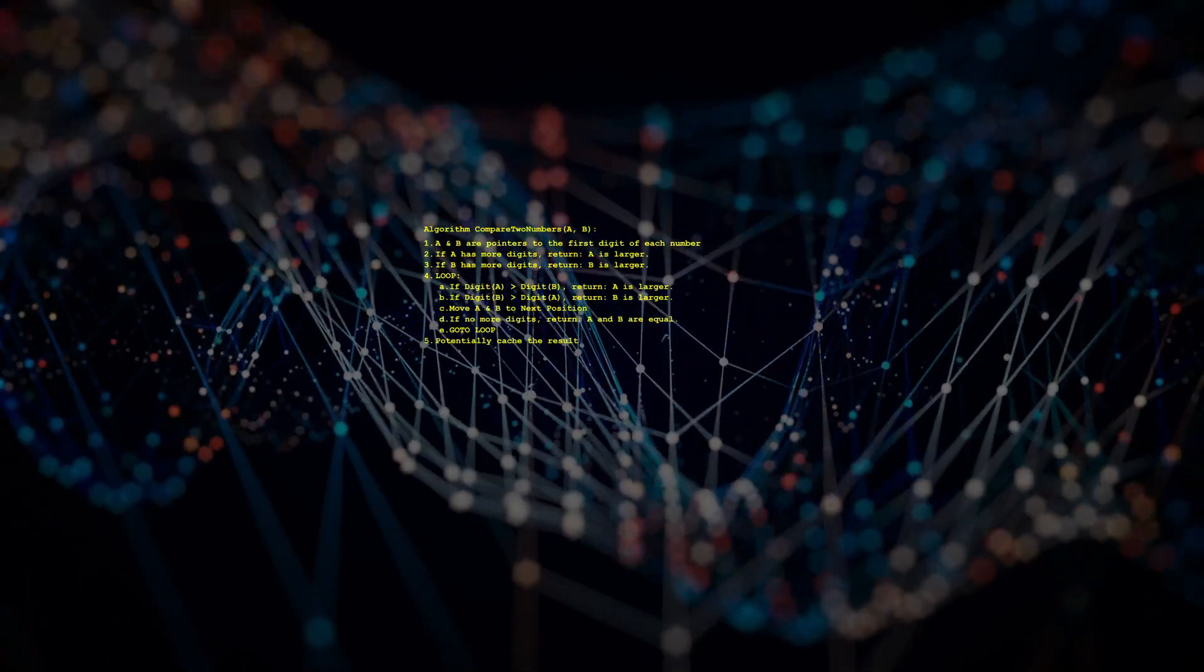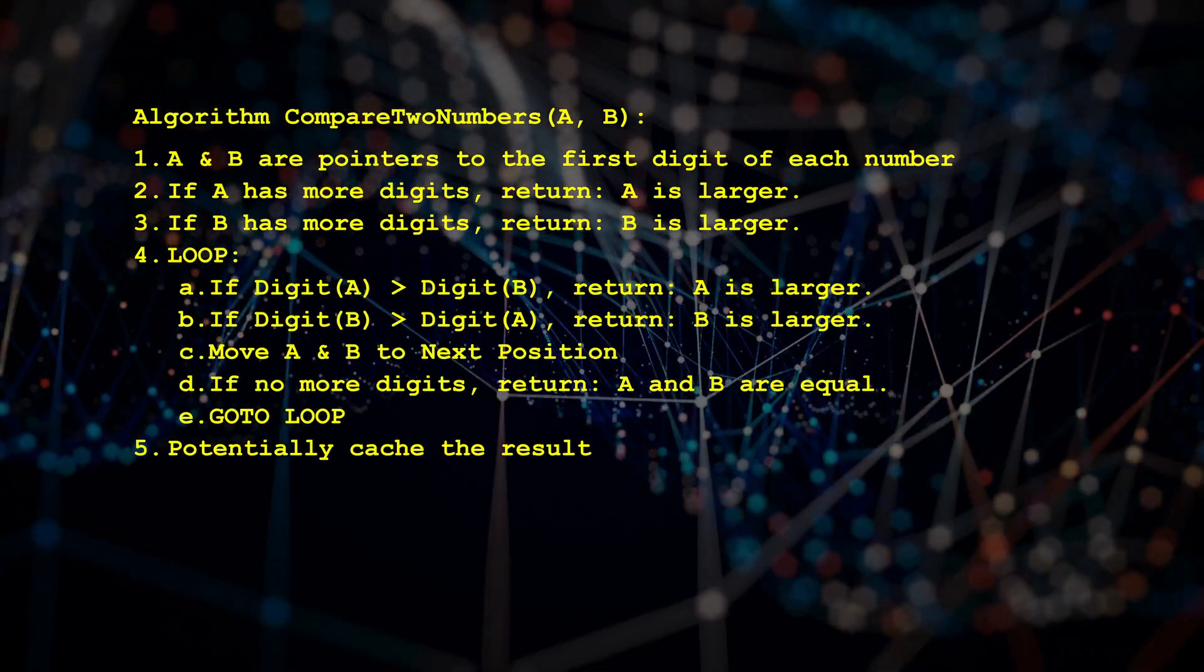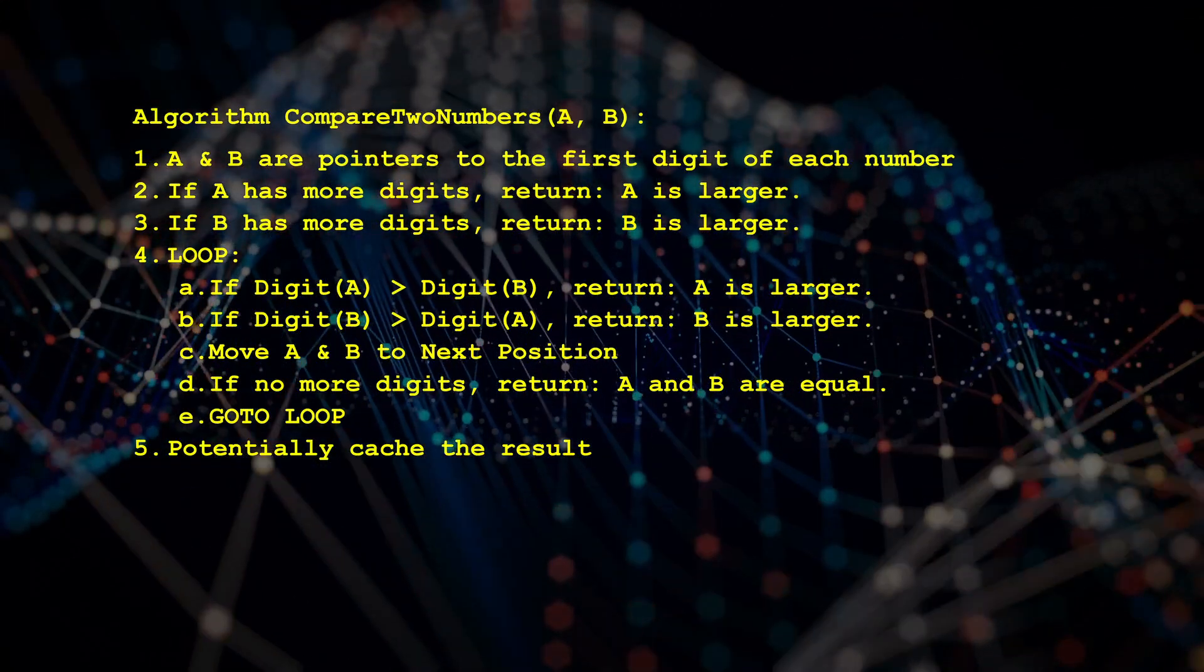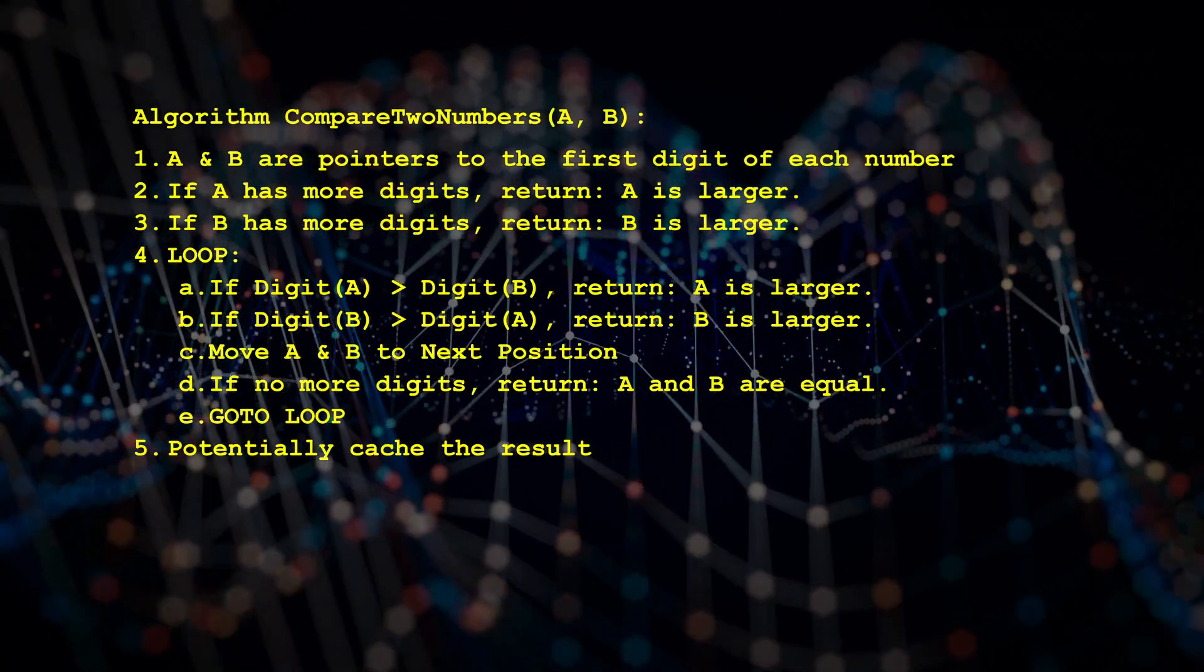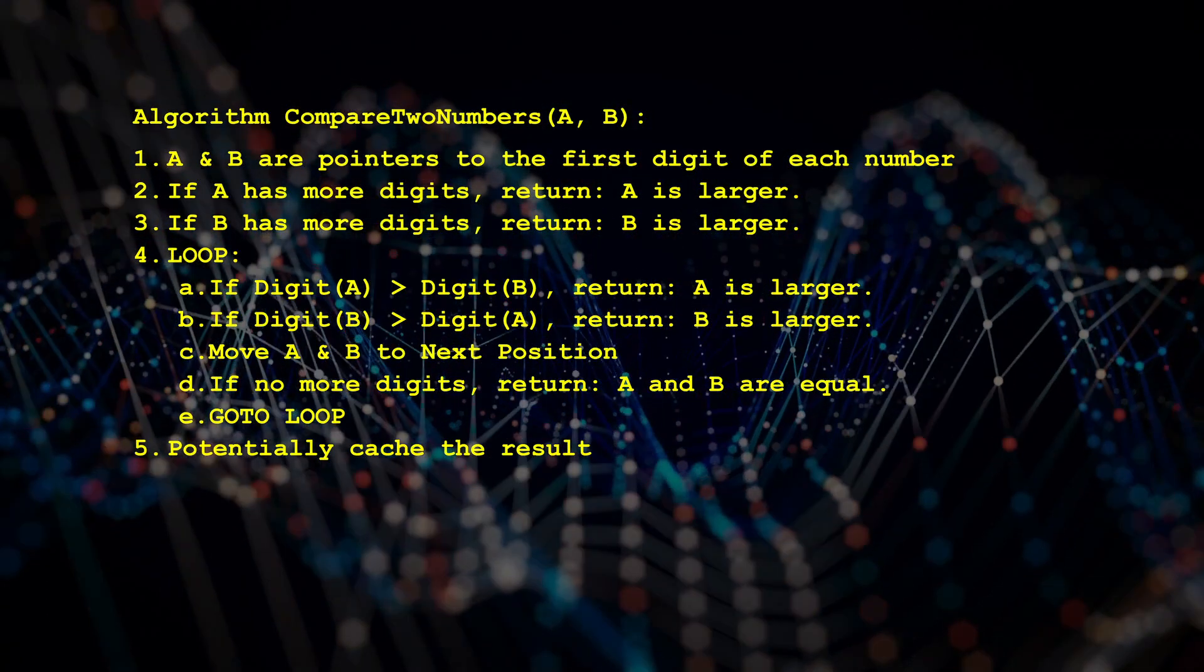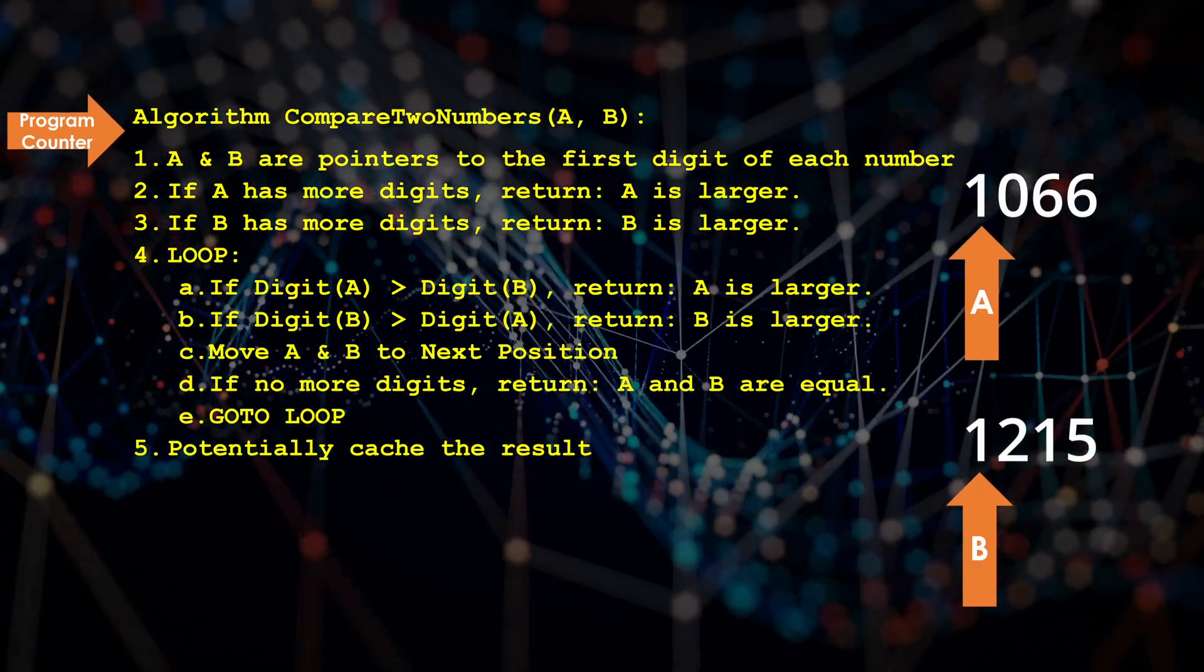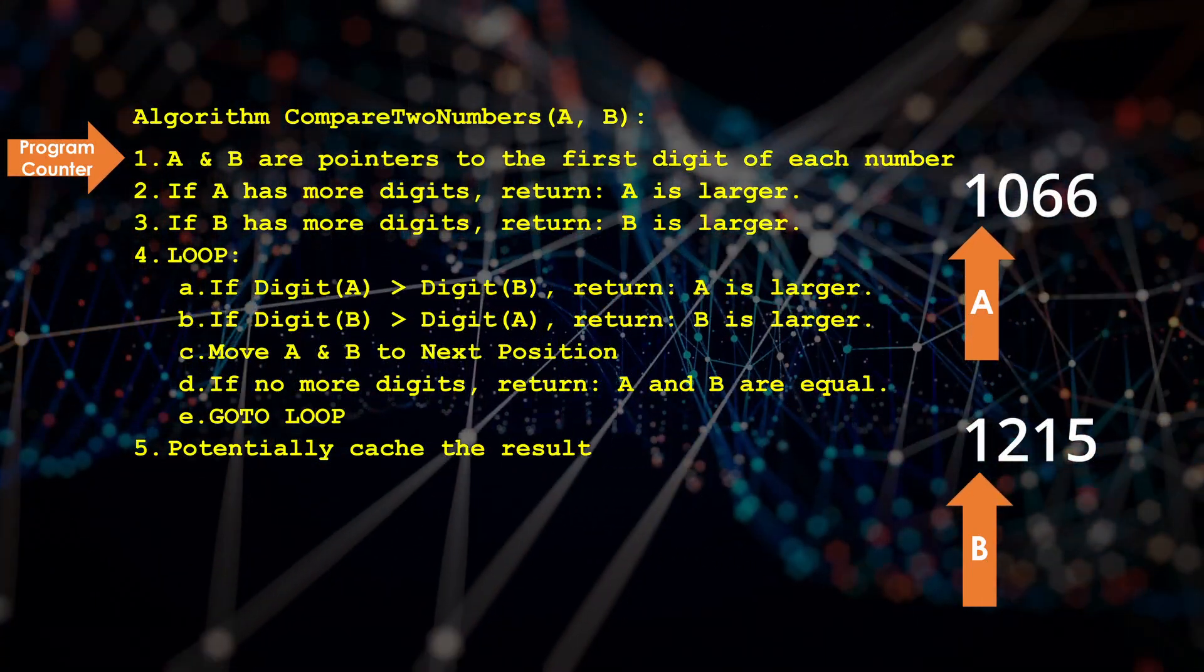So here's an outline of the algorithm your brain must use to let you answer the question of which is larger 1066 or 1215. I'll go through it quickly because you may have never thought that you needed an algorithm at all. Then I'll circle back with more details about how your brain must do this. Let's imagine a function to compare two numbers A and B. A and B must be the equivalent of pointers to the first digit of each decimal number.